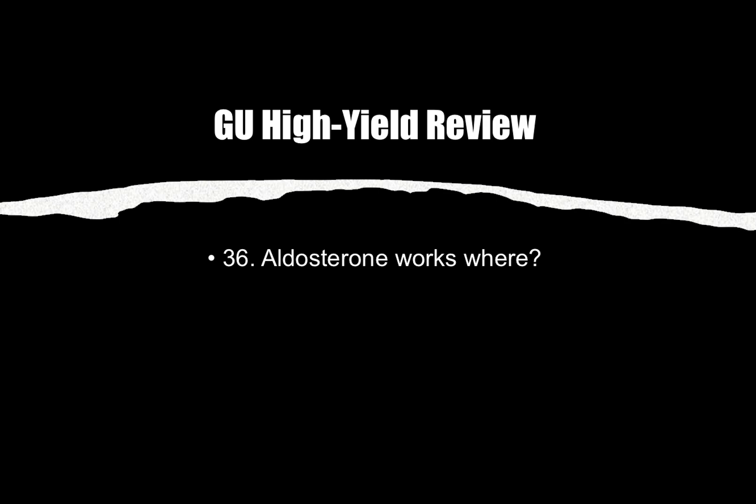Number thirty-five: Aldosterone works where? Aldosterone works in the distal convoluted tubule. This is easy to test — they'll list four different parts of the kidney and ask where aldosterone works. The answer is the distal convoluted tubule.